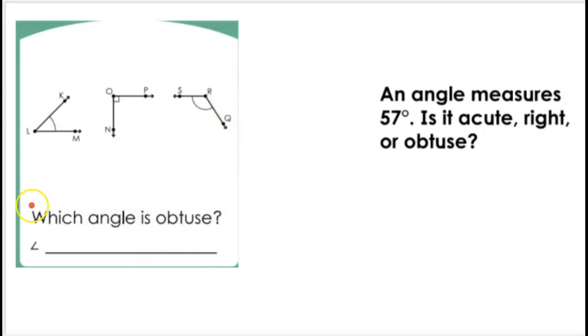So if we're trying to answer this question here, which angle is obtuse, that means we're looking for an angle that's greater than 90 degrees. So this angle is out, and the reason this angle is out is because it has that little thing in the corner, that little box that's letting us know that it's exactly 90 degrees. So that's the right angle. So that can't be obtuse.